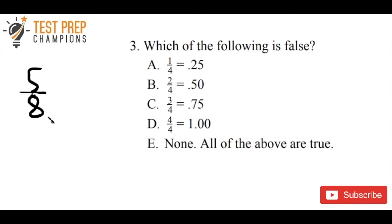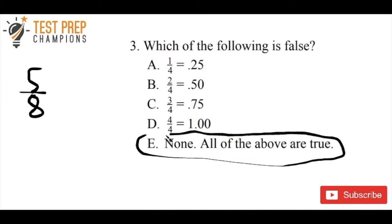Even easier, without doing any calculations — these are all values that are good to know. The answer is E, all of the above are true. You can check that in your calculator or just memorize these. For the GED math section there's not a whole lot to memorize, but memorizing the fourths will be really helpful. These are the bare essentials: 1/4 equals 0.25, 2/4 equals 0.5, 3/4 equals 0.75, and 4/4 equals 1.